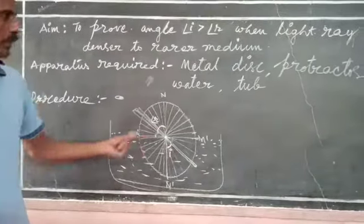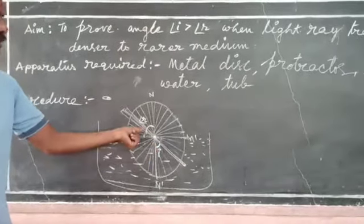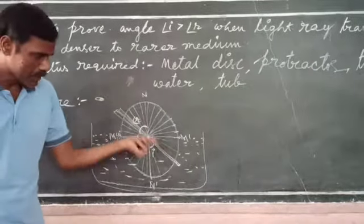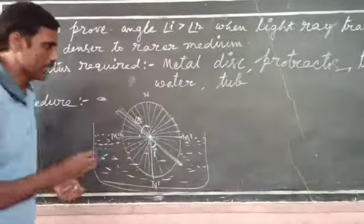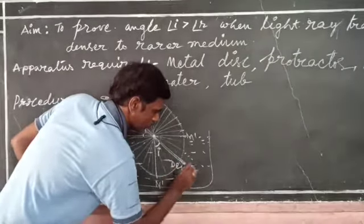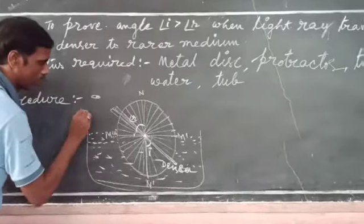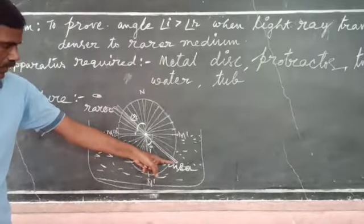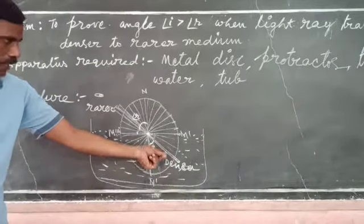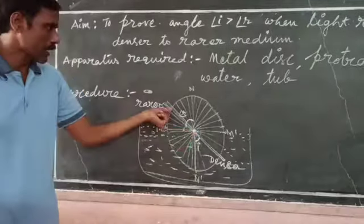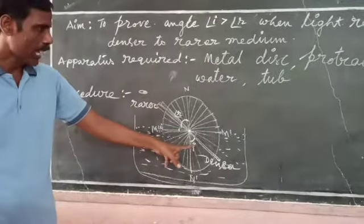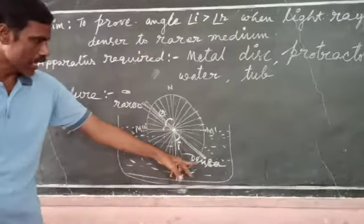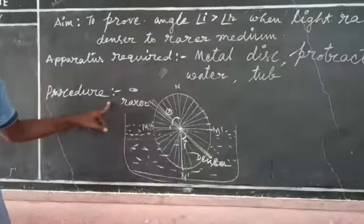After noting these two angles, you can observe that the angle of incidence is greater than the angle of refraction. In this case, the straw is inside the water, that is, it is in a denser medium, and the observer is in a rarer medium. That means the light ray is travelling from the denser medium to the rarer medium. That is why the angle of incidence is greater than the angle of refraction when light travels from a denser medium to a rarer medium. Thank you.